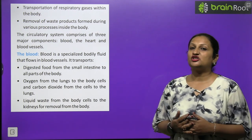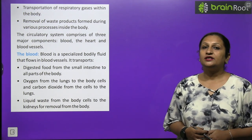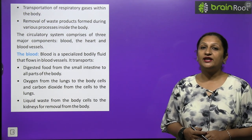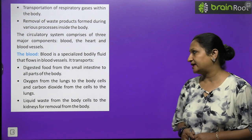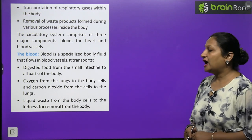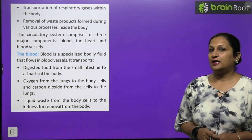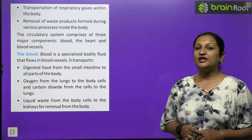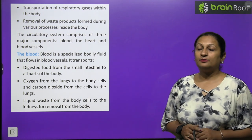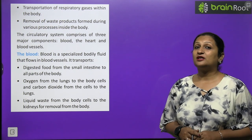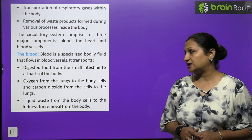Blood is a specialized body fluid that circulates from head to toe. It transports digested food, delivers oxygen to every cell, carries carbon dioxide back to the lungs, and transports liquid waste to the kidneys for filtration so that urine can be formed and excreted.